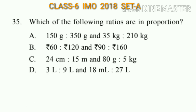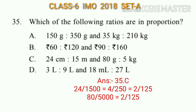Question number 35: Which of the following ratios are in proportion? The answer will be option C. 24 cm to 15 m (= 1500 cm) equals 4/250 = 2/125. Similarly, 80 g to 5 kg (= 5000 g) gives 80/5000 = 2/125. Both ratios are equal, so they are in proportion. The answer is option C. A link to Part 1 video is given in the description box. Thanks for watching!